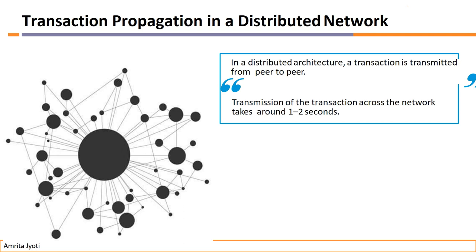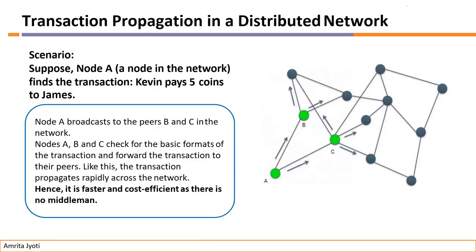Transmission of the transaction across the network takes around one to two seconds. For example, node A in the network finds the transaction — the same transaction as in the previous video, like Kevin pays five coins to James. Node A's neighbors are nodes B and C, so node A broadcasts to peers B and C. Then nodes A, B, and C check for the basic format of the transaction and forward it to their peers. Like this, the transaction propagates rapidly — it's faster and cost efficient as there is no middleman.